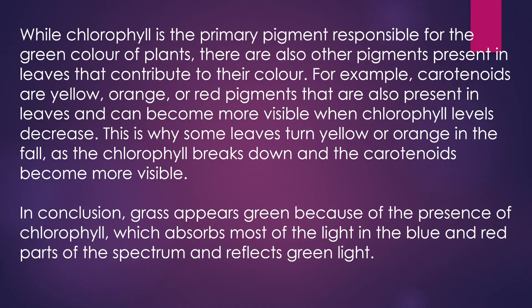Carotenoids can become more visible when chlorophyll levels decrease. This is why some leaves turn yellow or orange in the fall, as the chlorophyll breaks down and the carotenoids become more visible.